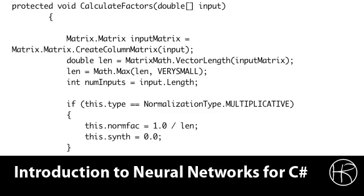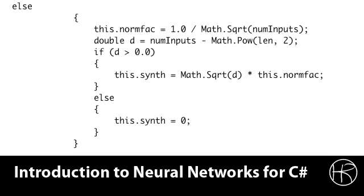The program then continues. If this is not multiplicative normalization then it must be z-axis normalization because these are the only two types of normalization we are evaluating in this course. The else statement that you see here will be executed if this is indeed z-axis normalization. We calculate the normal factor by taking the reciprocal of the square root of the number of inputs. This normalization factor is going to be multiplied against all of the inputs to properly normalize them.